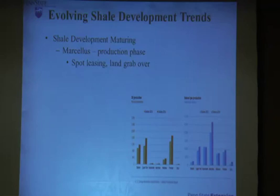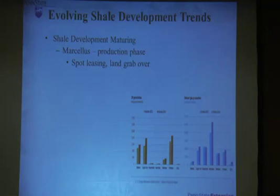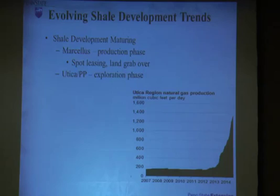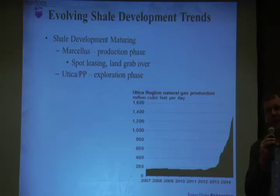From a development standpoint, the Marcellus is definitely more of a mature play — it's in the production phase. For the most part, the operators know where they're going to drill and they have a pretty good idea of their pace of development. That big land grab and leasing activity has slowed down. You're starting to see, as we're in about the fifth or sixth year, some of those leases being renewed or coming up for renewal. The Utica is really in that exploration phase — you've got hundreds of wells versus thousands of wells in the Marcellus. They're still finding where the valuable land is going to be and where they're getting enough gas, liquids, and oil to make it worthwhile.